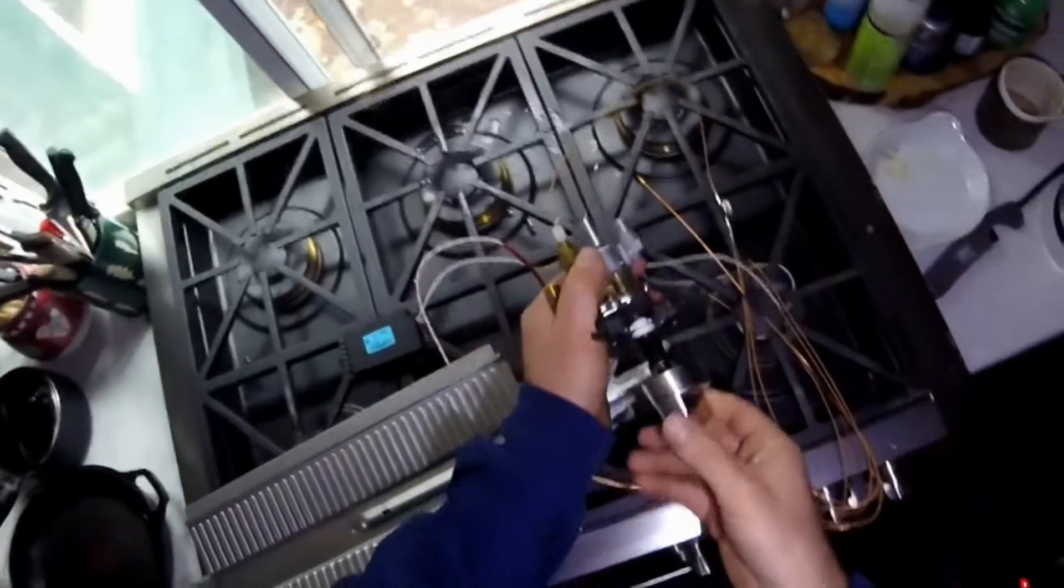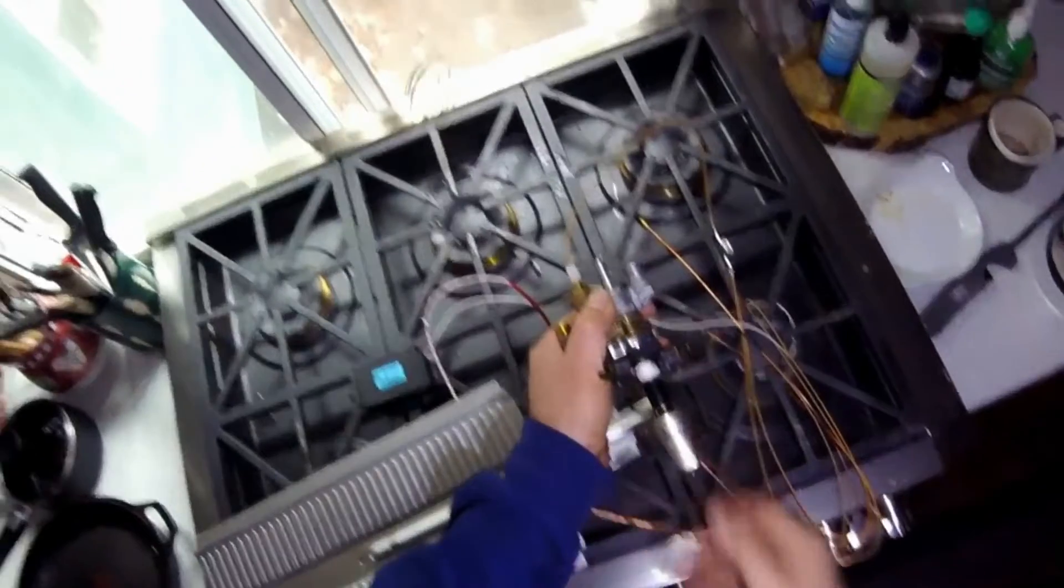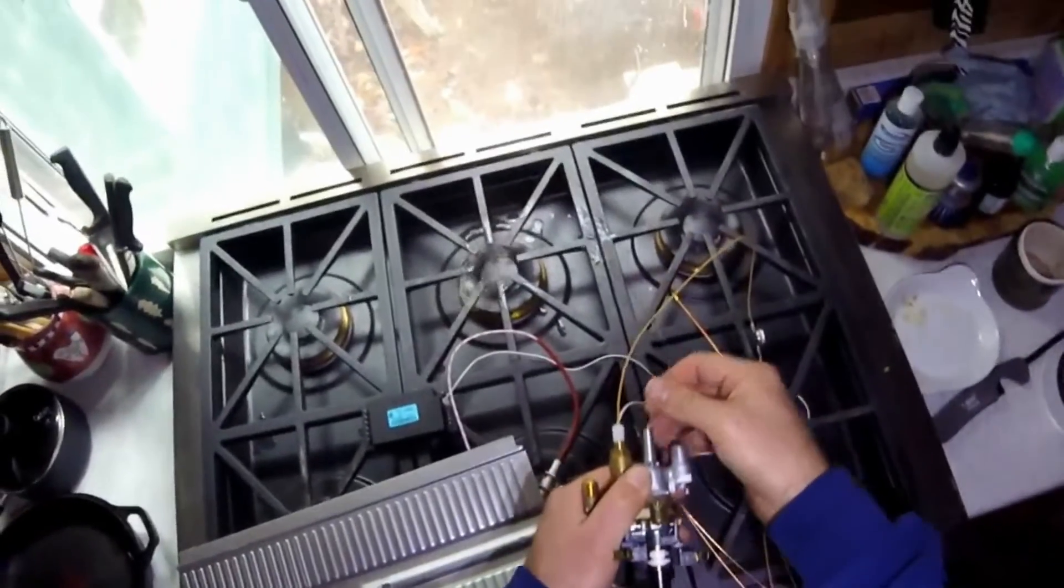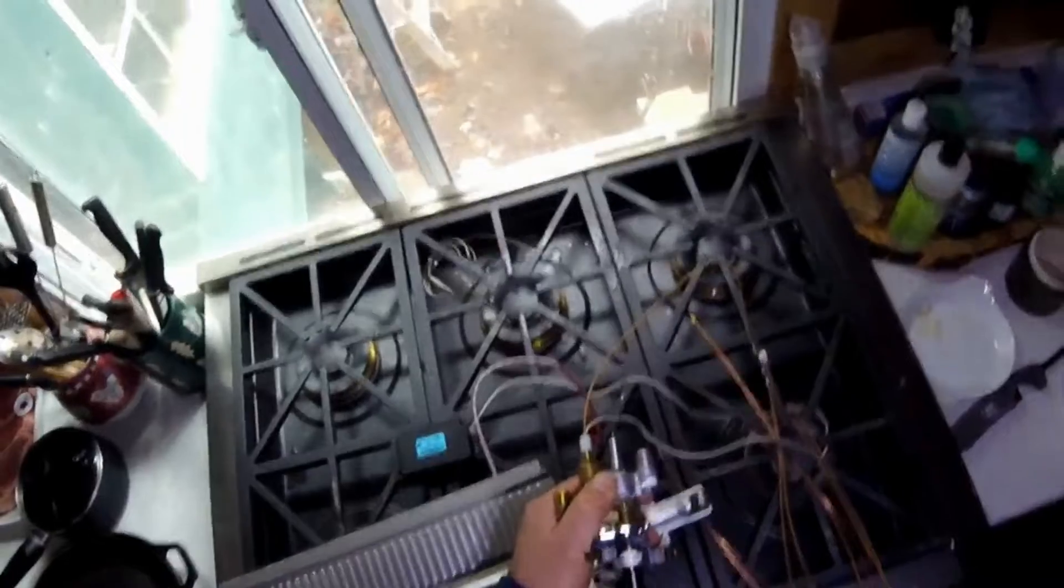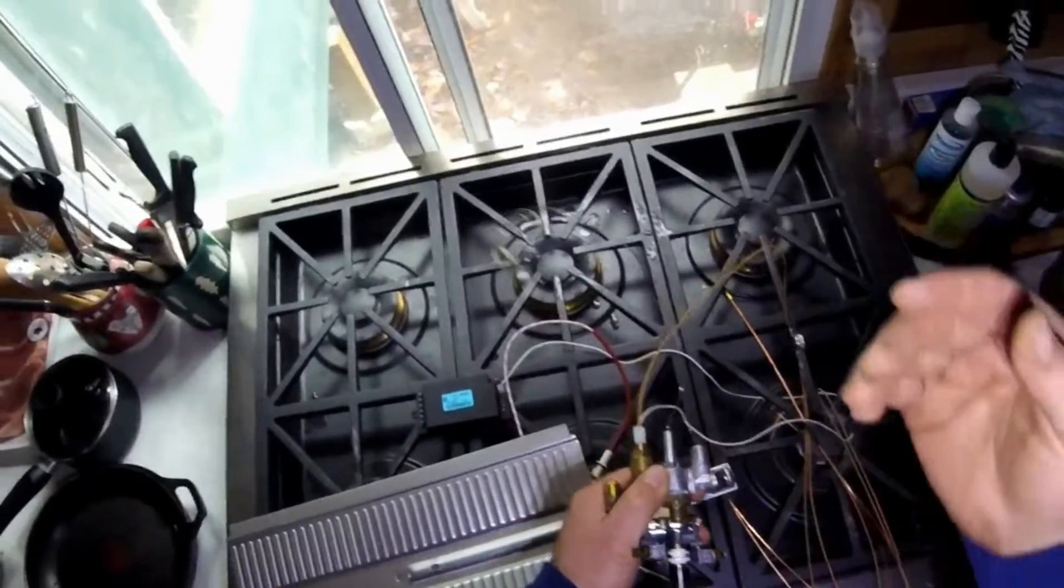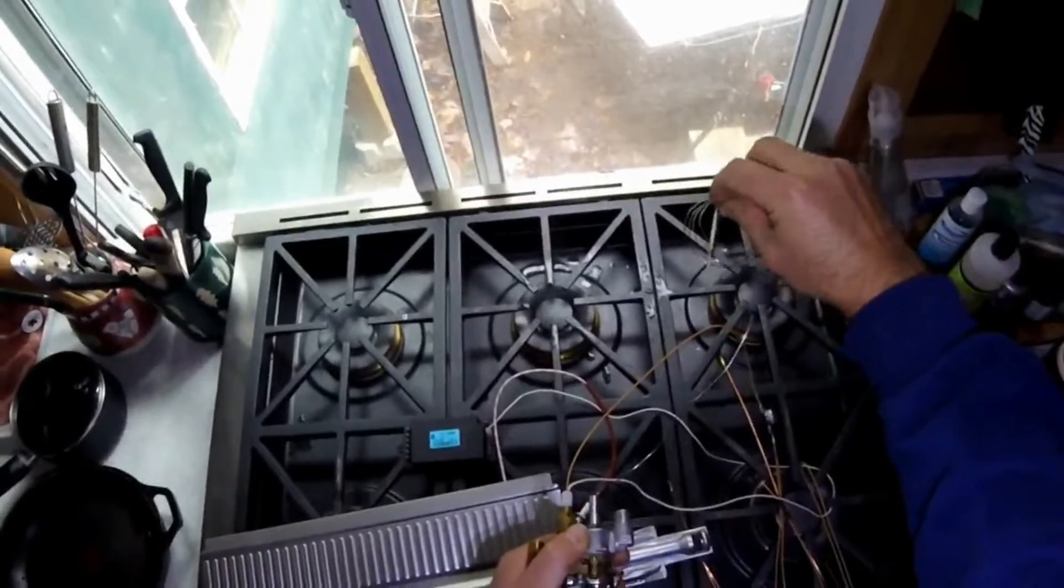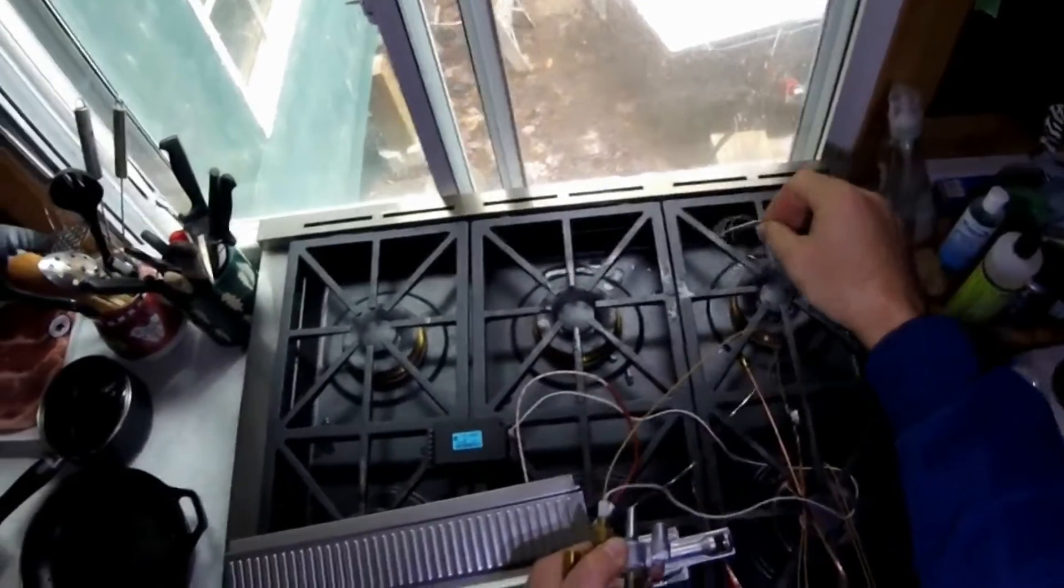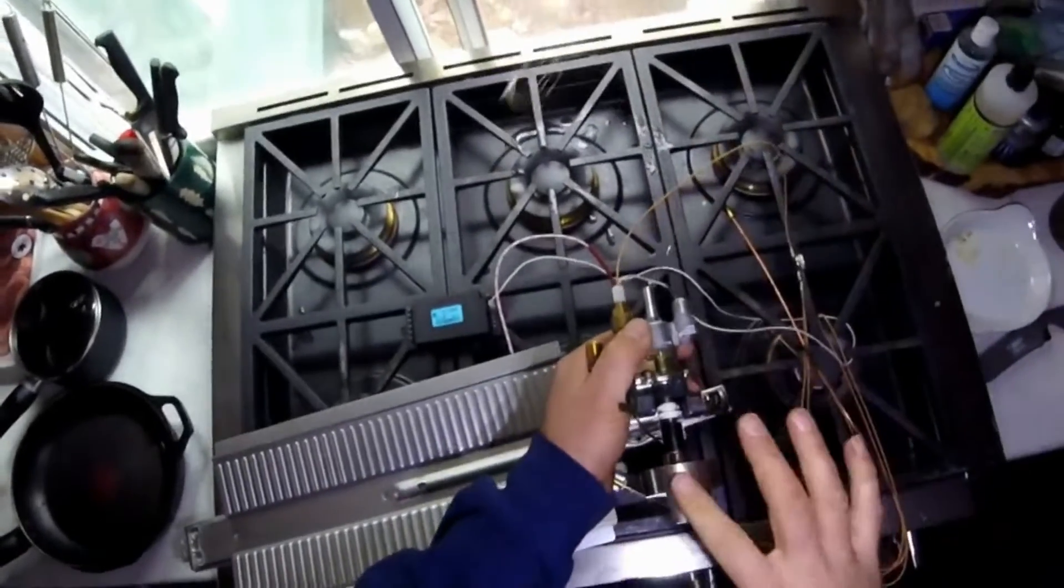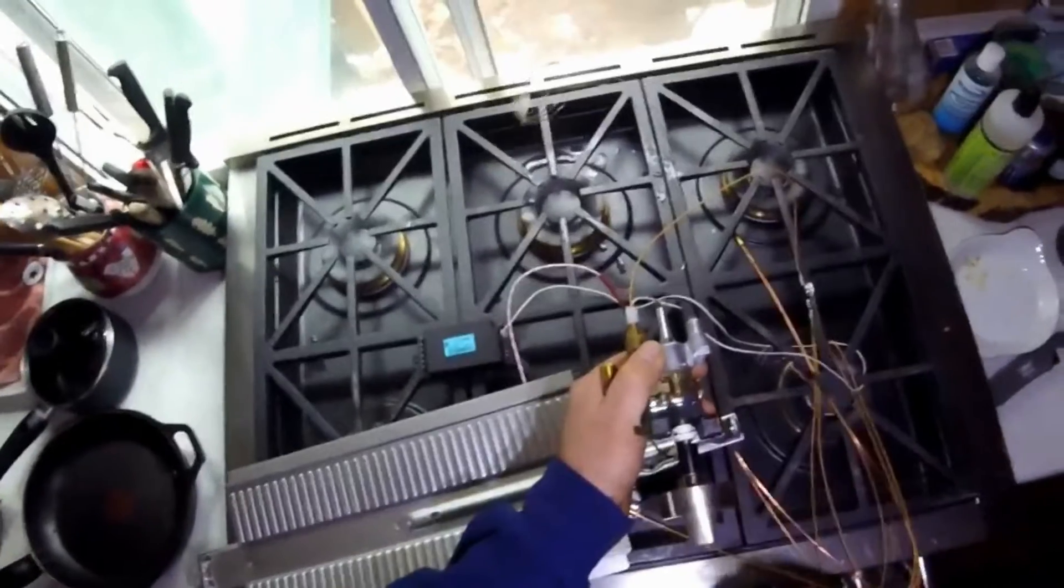But what happens is you also have this thermostat feeler bulb. So when you choose a set temperature on the knob, on this valve, it will continue to allow the gas to run at full, full heat, until this valve, or until this thermostat gets to the temperature that corresponds to on the knob.